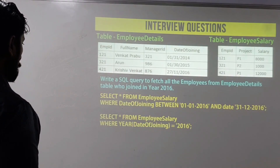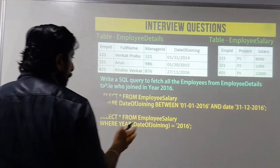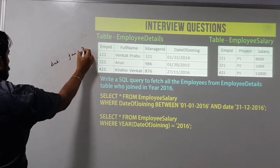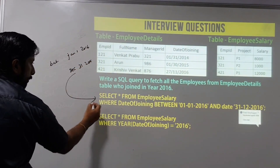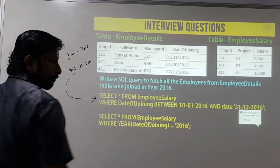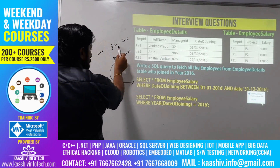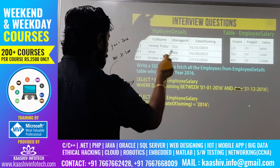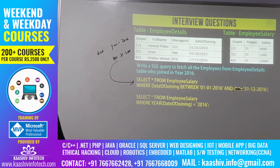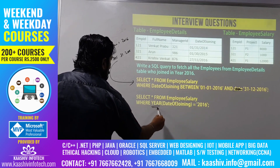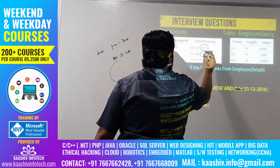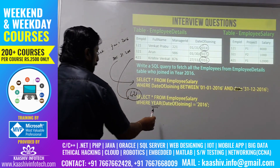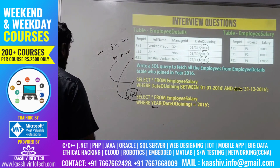Write a SQL query to fetch all employees from employee_details who joined in the year 2016. One approach uses BETWEEN: SELECT * FROM employee_details WHERE date_of_joining BETWEEN '2016-01-01' AND '2016-12-31'. Another approach uses the YEAR() function: SELECT * FROM employee_details WHERE YEAR(date_of_joining) = 2016. Employee 421 is the expected result.